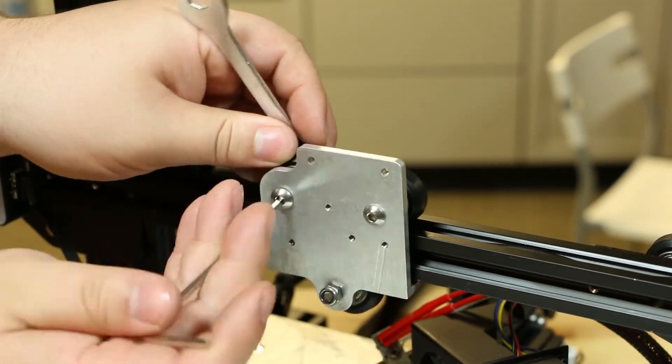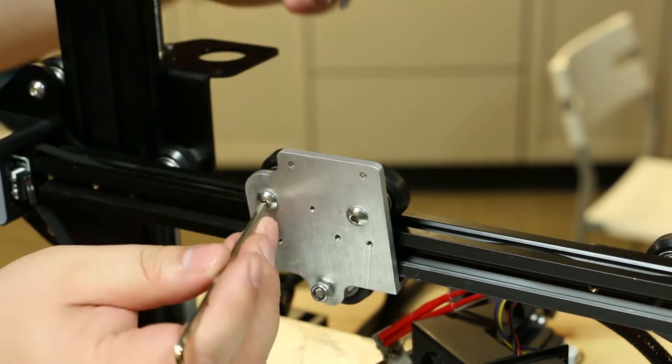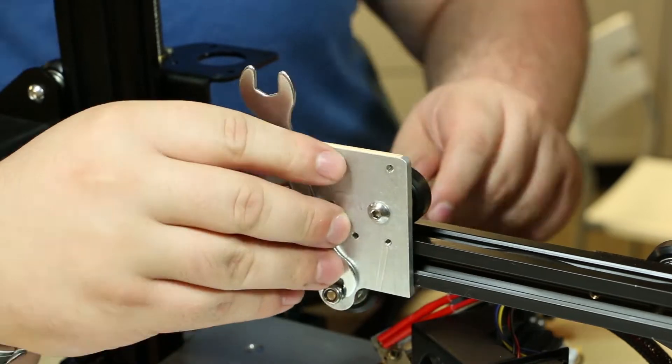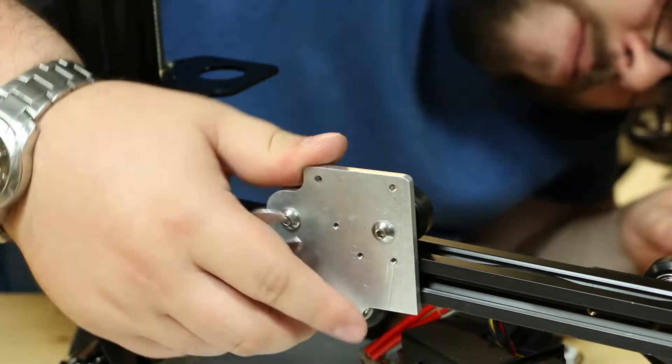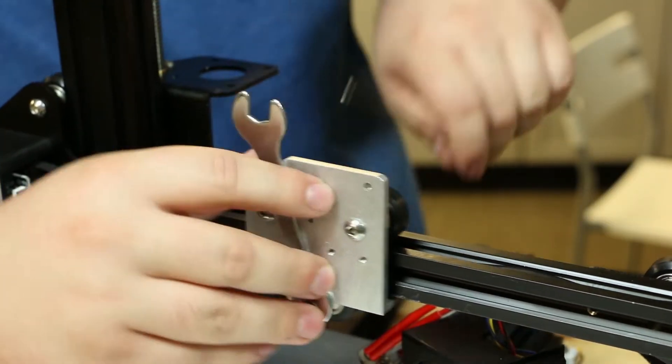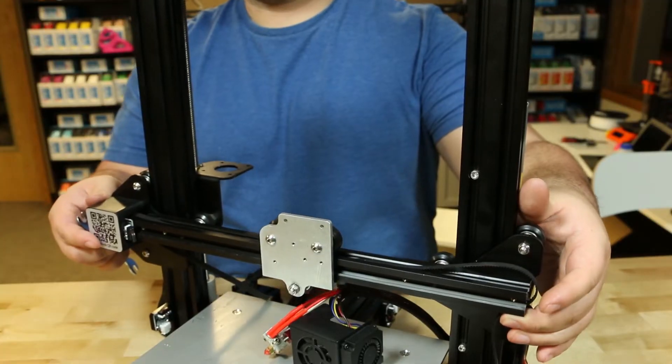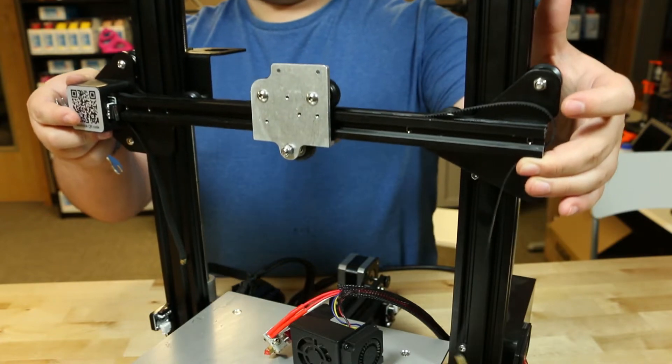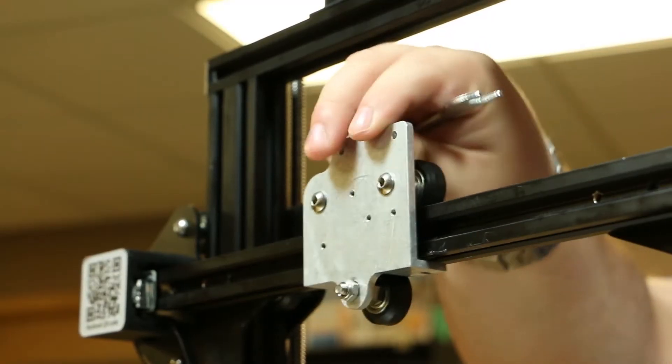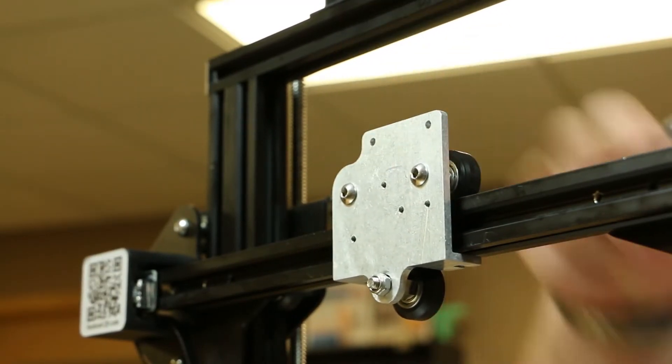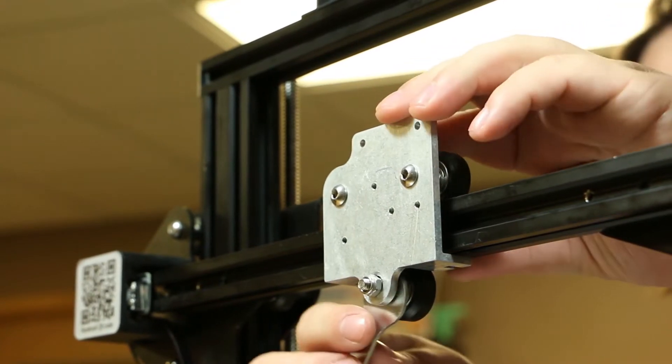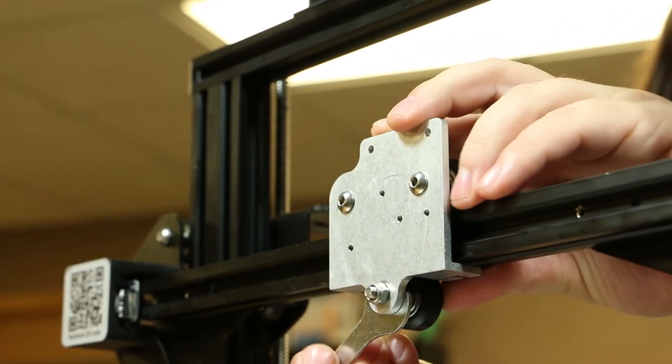Make sure all the wheels now are on tight. Now, raise the gantry to a workable height for you. See, the X-axis carriage jiggles a little. That can be fixed with the crescent wrench to adjust the eccentric nut to make it tighter.